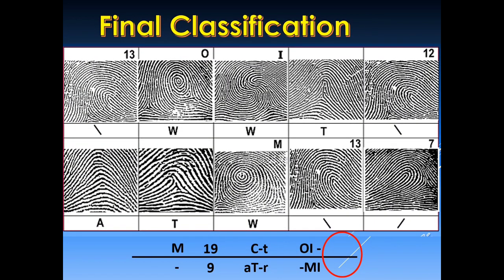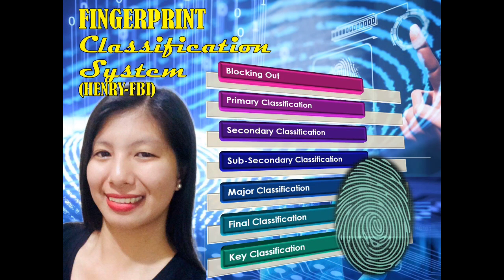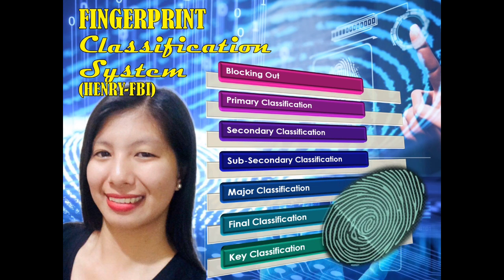Here is our last example under final classification: there is a loop pattern on both little fingers. The priority here is on the right little finger, and we simply copy the ridge count and place it in the classification line. Since it is taken from the right little finger, we place it above the classification line. That's it for this video — thank you for watching, please like, comment, and share, and don't forget to subscribe to our channel for more videos to come.